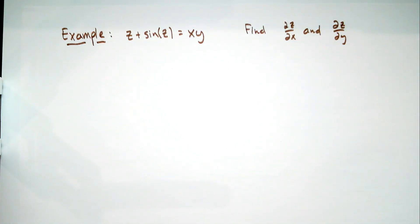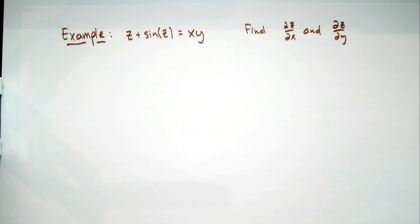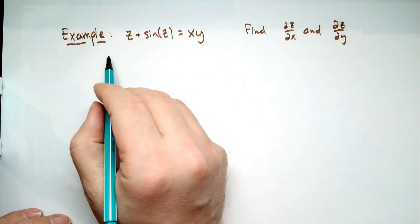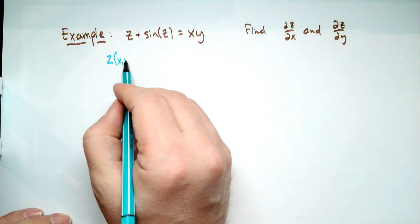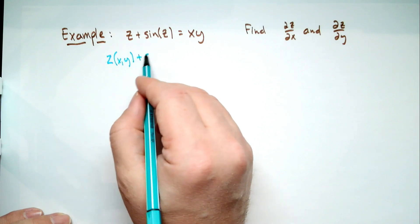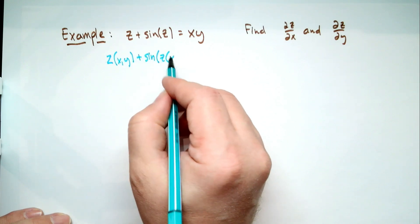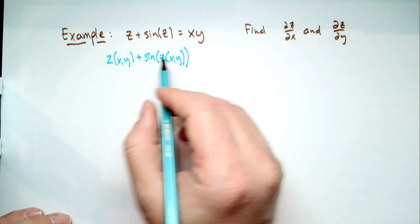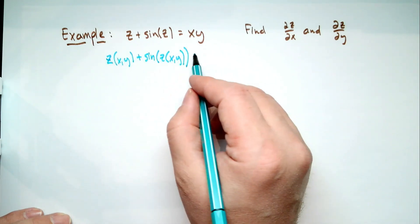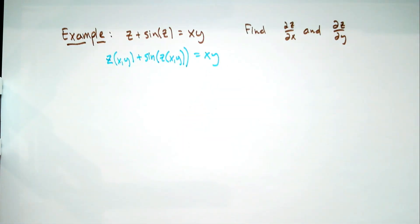How do we approach this problem? The key is to think about what's in your mind. You say: I know that Z depends on X and Y — I don't know how — but there's some function out there, Z of X, Y. And I'm really going to write it as: Z(X,Y) plus sine of Z(X,Y) equals X times Y. This is in your mind; you don't have to actually write it out, but it helps emphasize what's going on.